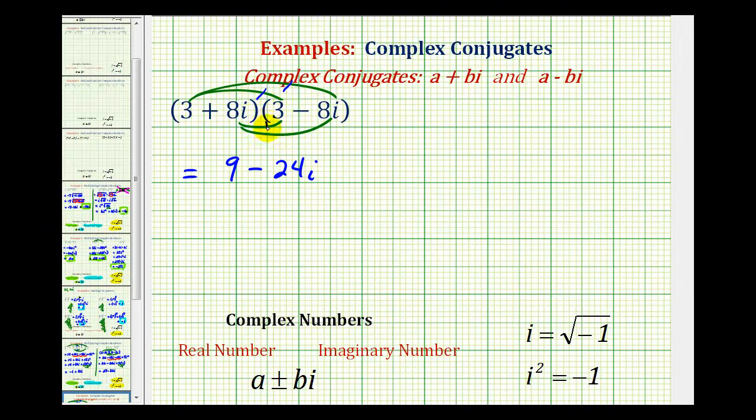And then we have eight i times three. That's positive 24i or plus 24i. And the last product we have eight i times negative eight i. That would be negative 64i squared or minus 64i squared.